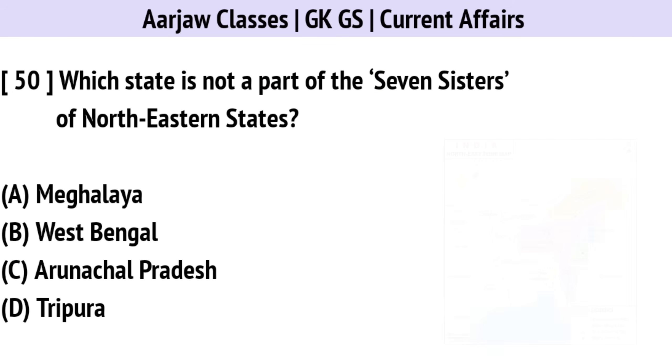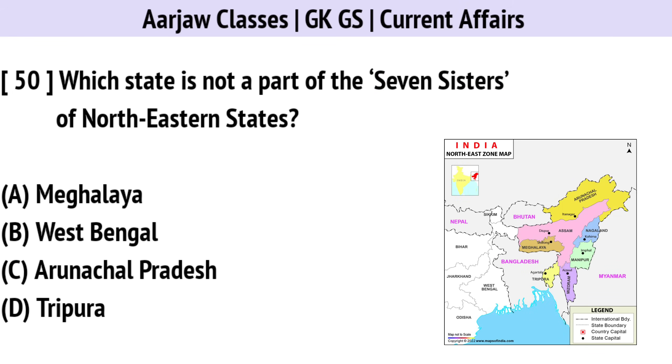Which state is not a part of the Seven Sisters of Northeastern states? Correct option is B — West Bengal.